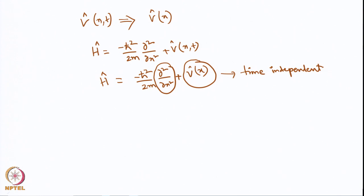In such a scenario, the wave function ψ(x,t) can be written as a product of ψ(x) multiplied by φ(t). Because if you see, the Hamiltonian only depends on the coordinate. Any partial derivative with respect to the coordinate will have time as a constant. Therefore, φ(t) can be brought out of the wave function.